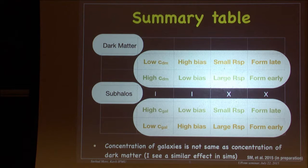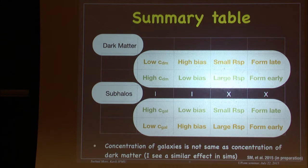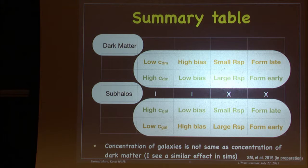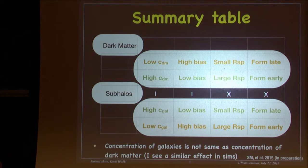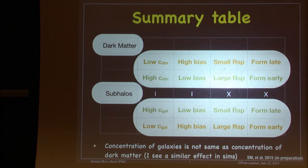We have tried to buffer ourselves from systematics as much as possible. One systematic test was to cut on P_cen: the RedMaPPer catalog gives P_cen for five candidate central galaxies, and we required the highest P_cen to be at least 0.8 — we get the same answer. We also marginalized over off-centering parameters in the weak lensing fits.